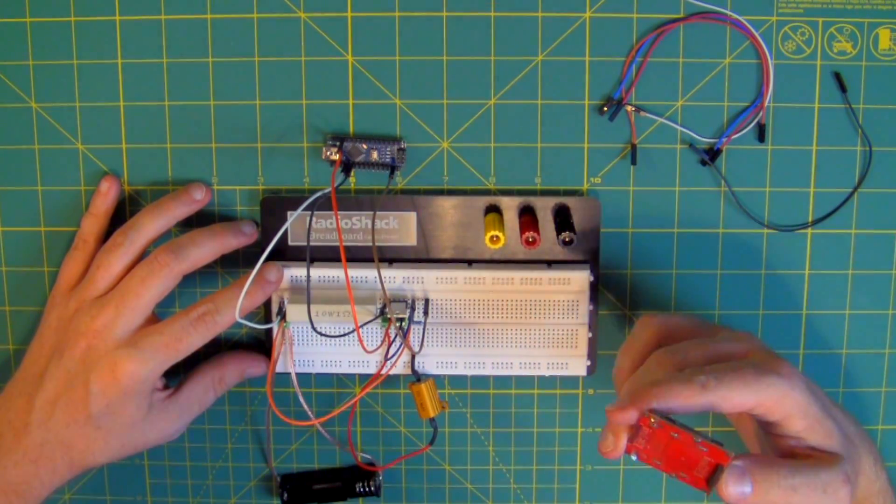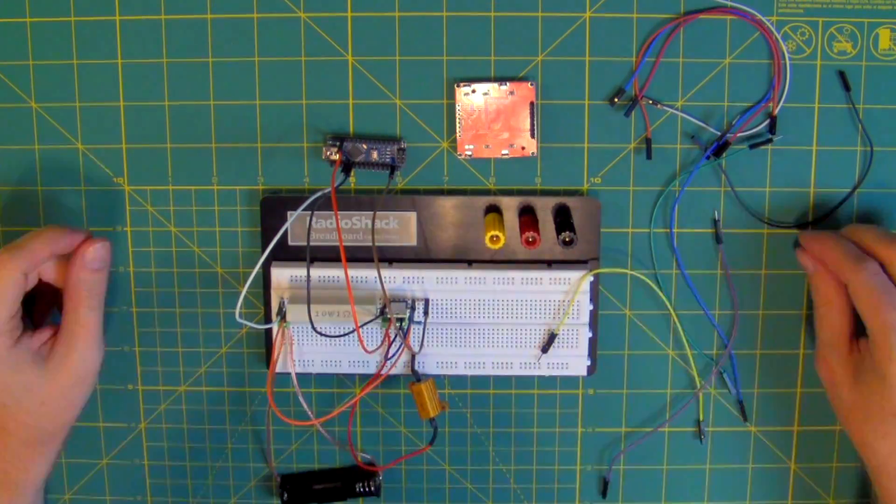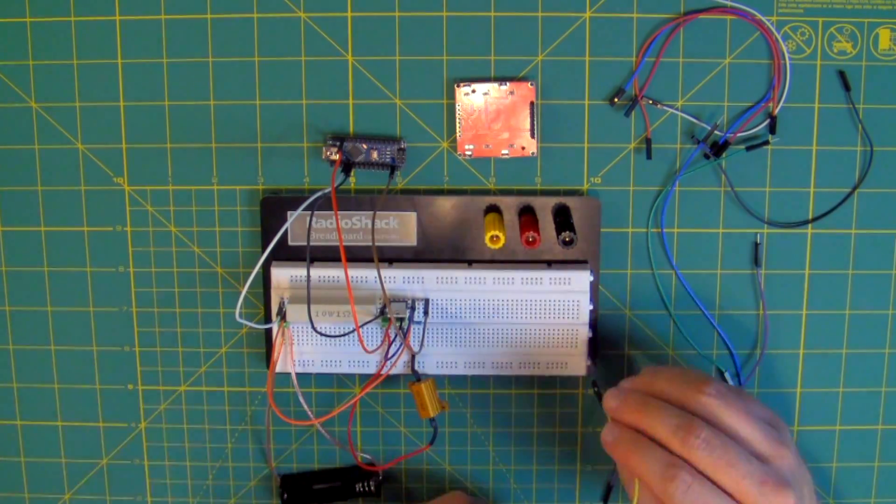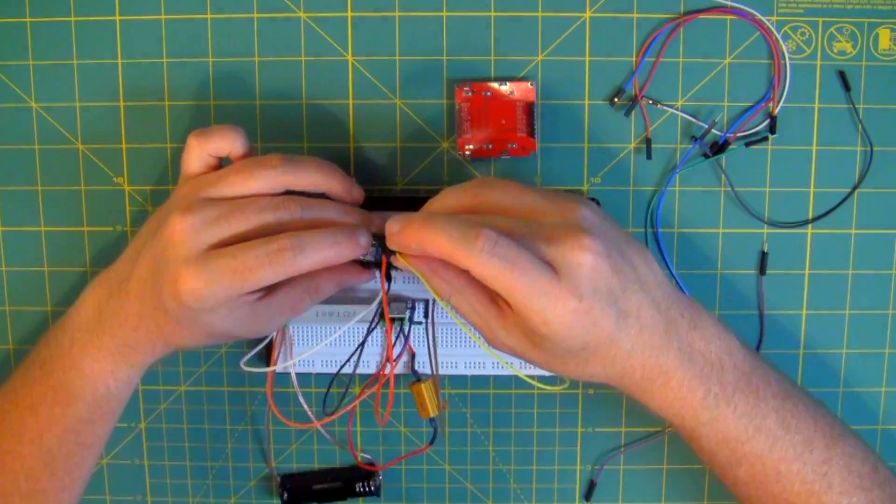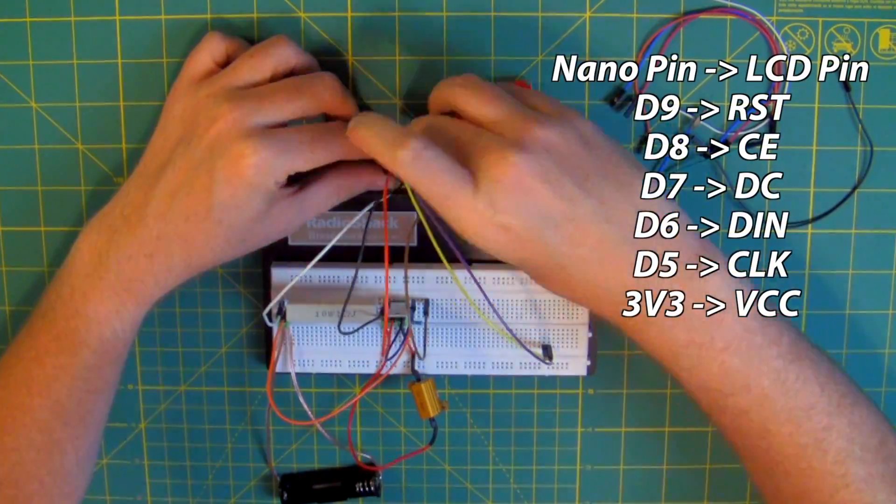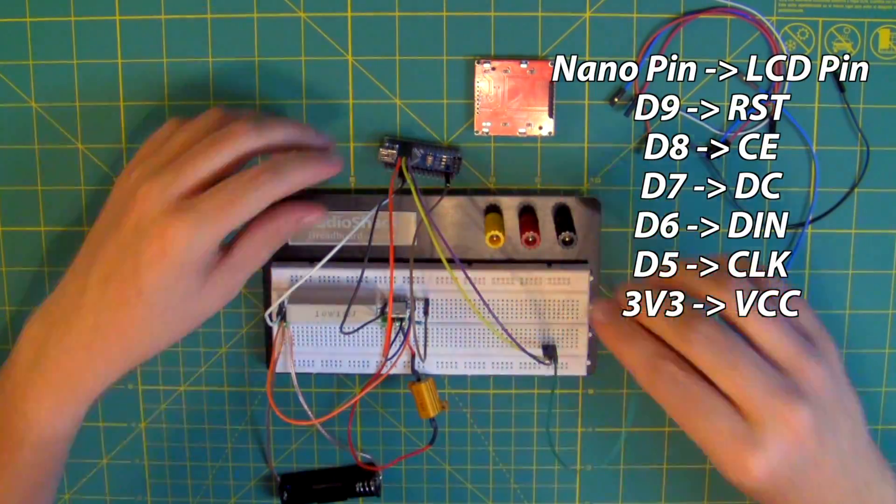Lastly, we need to connect the screen module. Make sure you've got plenty of space on the breadboard and test fitted to be sure. Then just connect the digital pins to the appropriate pins on the screen as shown here.